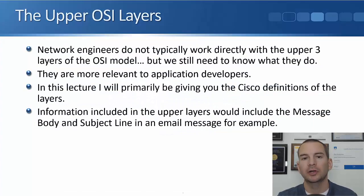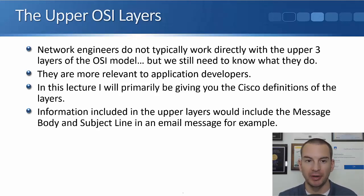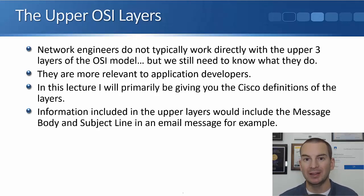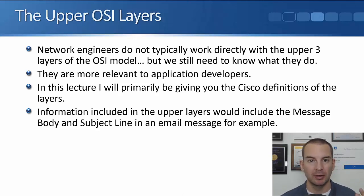In this lecture, you'll learn about the upper layers of the OSI model — that's the upper three layers: five, six, and seven. Network engineers don't typically work directly with those upper three layers. They're more relevant to application developers, but we still need to know what they do. For the exam, we need to know the definitions of each of the layers. It's quite likely that you'll be tested on that, so in this lecture I'll primarily be giving you the Cisco definitions so you'll be ready for the exam.